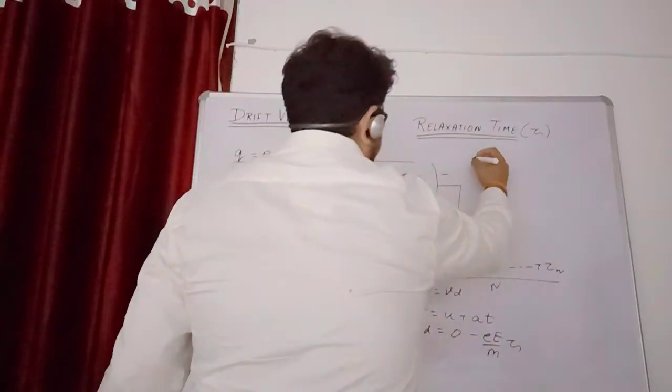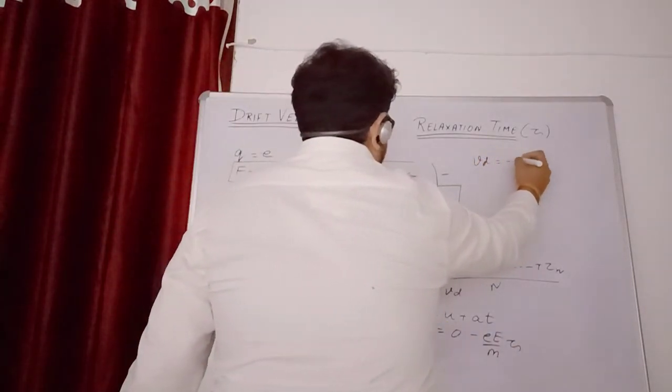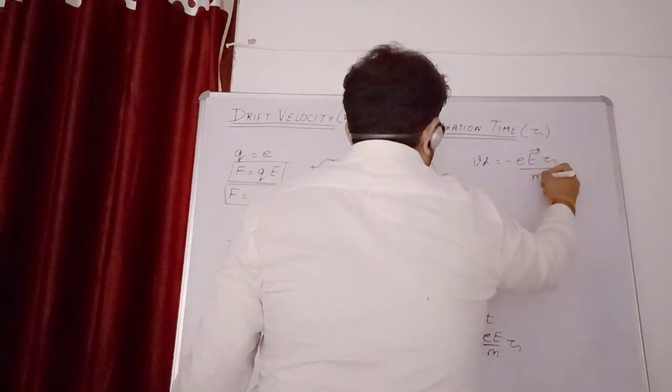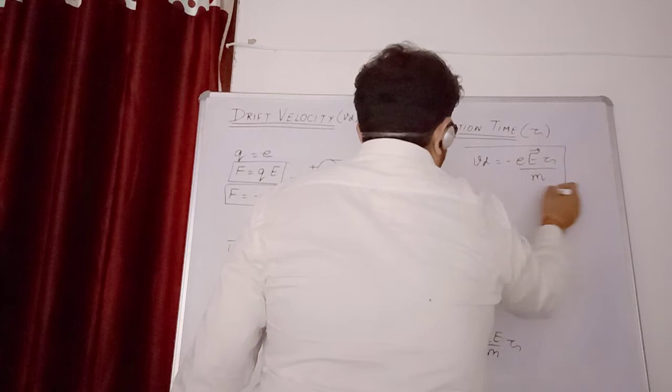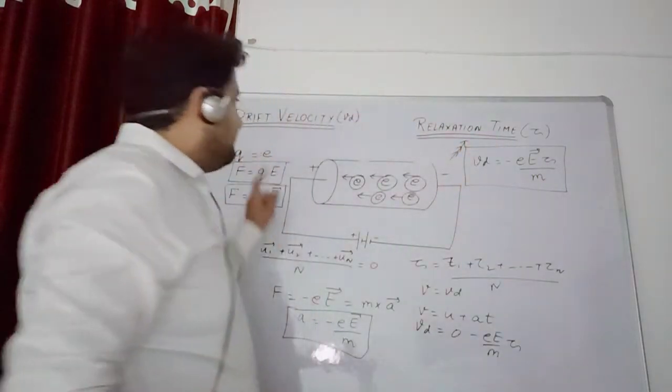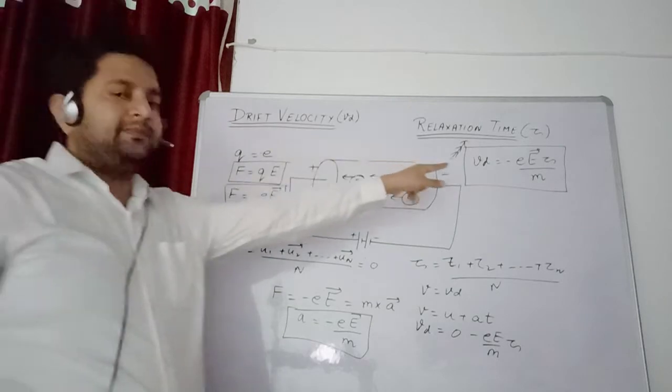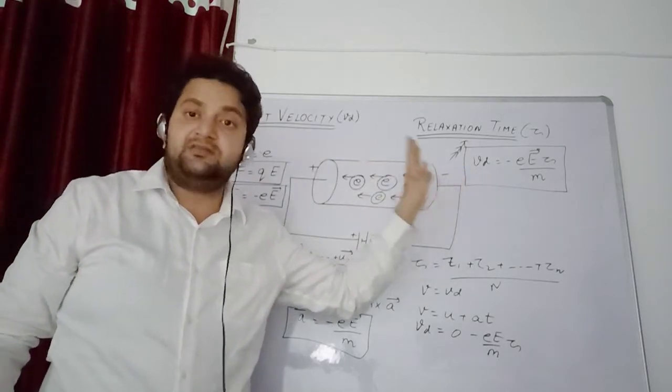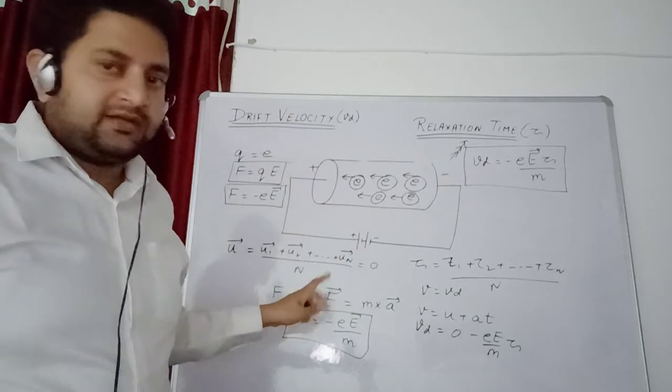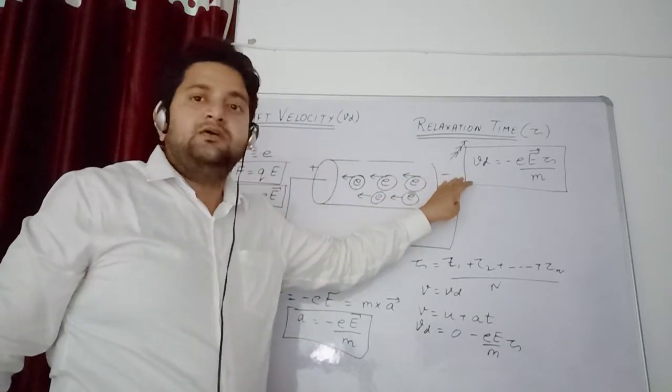Now relaxation time I assume tau 1 plus tau 2 plus up to tau n upon n, this is average relaxation time. Final velocity is vd. Now third equation of motion is v equals u plus at. Here v is vd, u is 0, and acceleration is minus e e upon m into tau. So vd equals minus e e vector tau upon m.